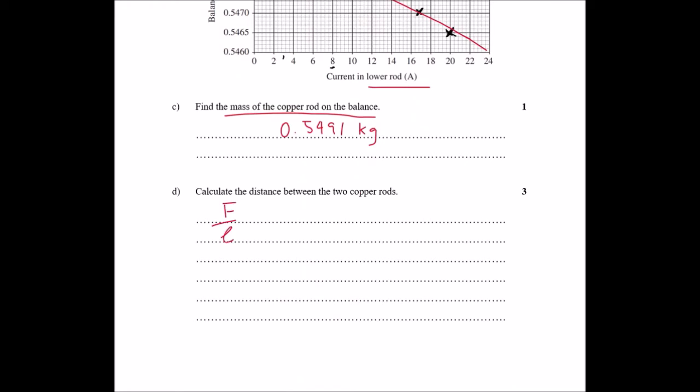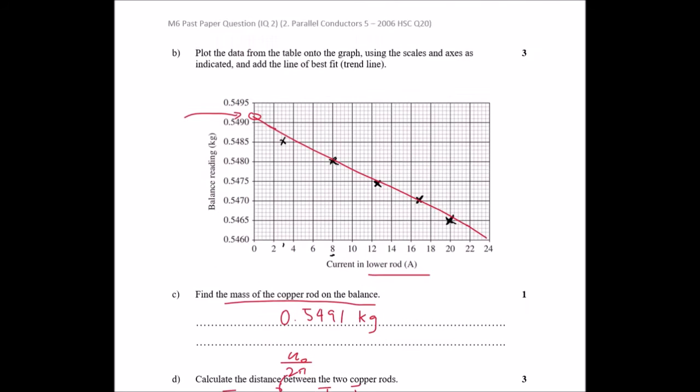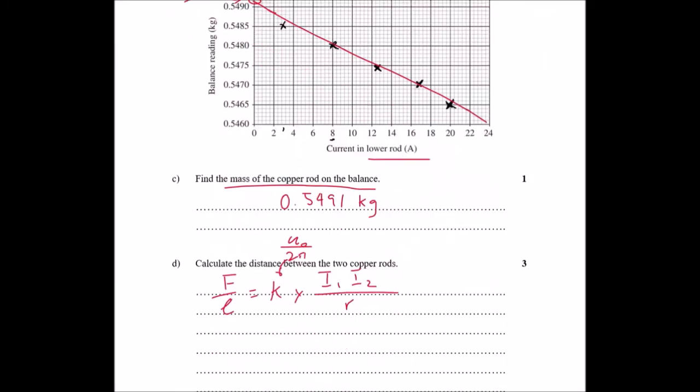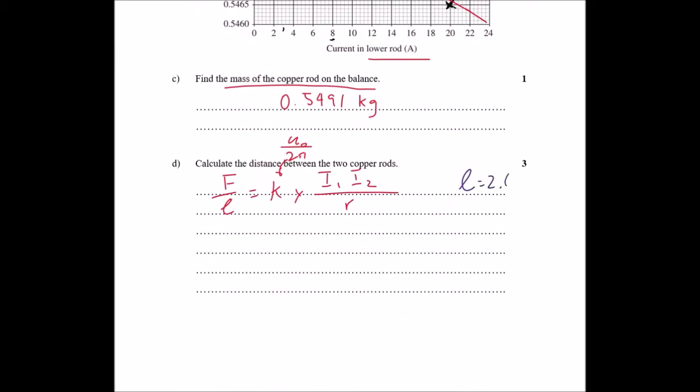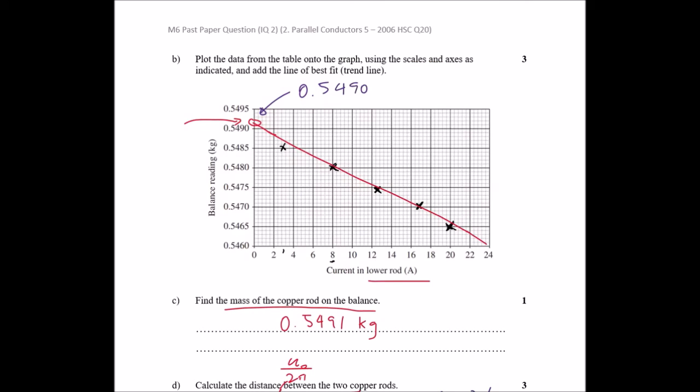According to this formula, so that k, which k is just mu naught over 2 pi. So that's that bit there times current 1 current 2 over distance of separation. Okay. The length of the rod is 2.6.